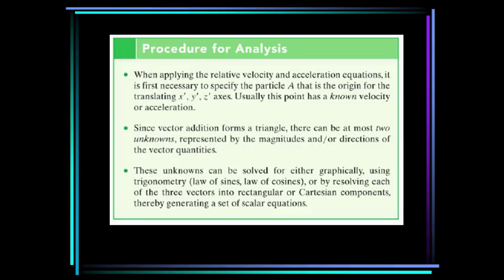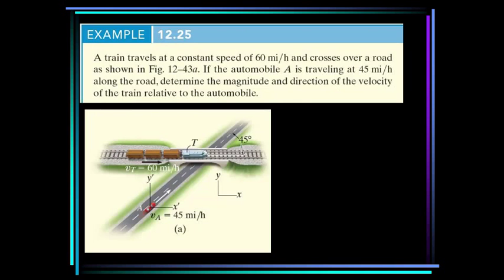Our procedure for analysis: first, specify the particle A that is the origin for the translating axes — usually this point has a known velocity or acceleration. Since the vector addition forms a triangle, there can be at most two unknowns. You can solve for these graphically using the law of sines or cosines, but it's much easier to resolve the three vectors into rectangular or Cartesian components, and that's the way we'll solve these problems.